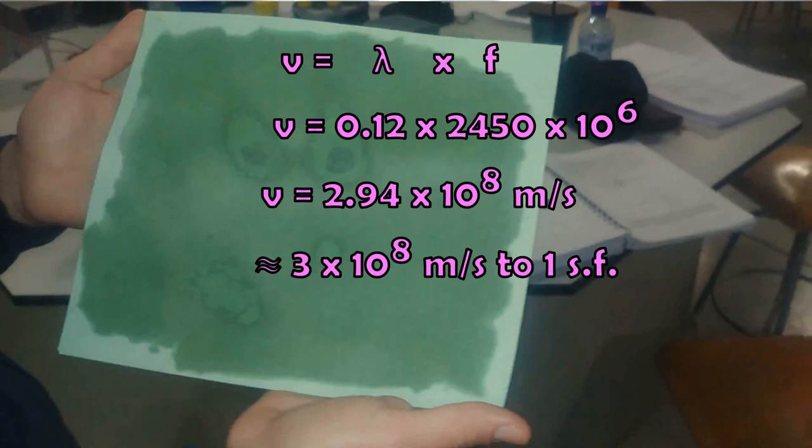Do you remember the uncertainty? Our measurement between the antinodes was 6 centimeters, and that was plus or minus 1 centimeter, the half range. It gives us an uncertainty of 17 percent. But hey, never mind, we had fun.